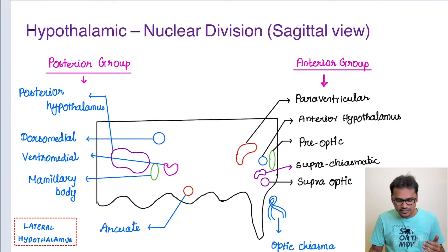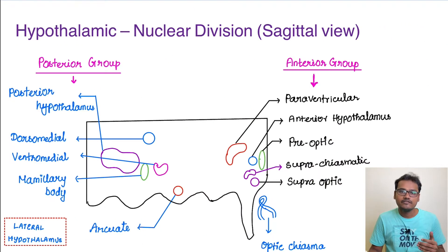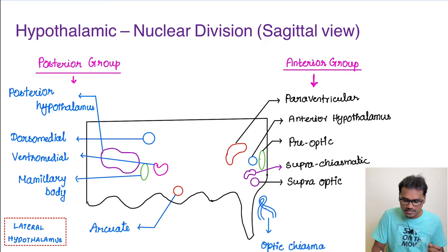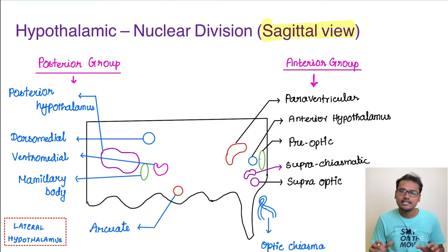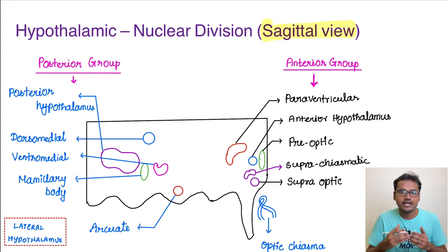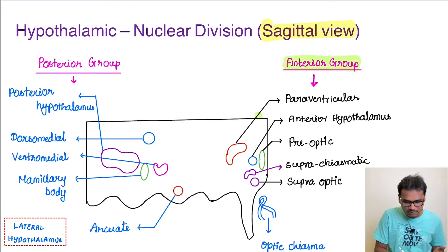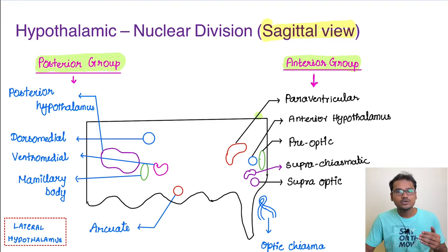Coming to the divisions of the hypothalamus, we will see them in two views: one is the sagittal view and another is the coronal view. In the sagittal view, there are basically two groups of nuclei — one is called the anterior group, located anteriorly, and the other is the posterior group.